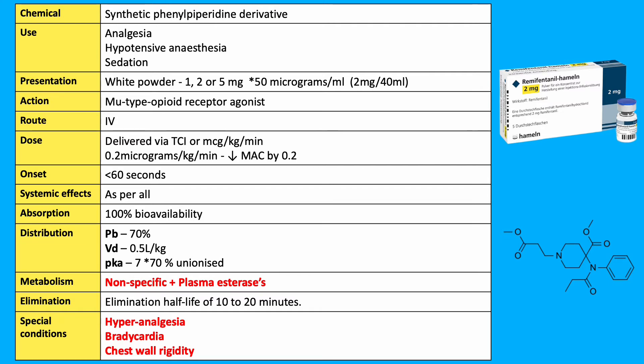Protein binding is high at 70%, with a small volume of distribution of 0.5 L/kg. The metabolism is carried out by nonspecific esterases and plasma esterases, with an elimination half-life of 10–20 minutes.